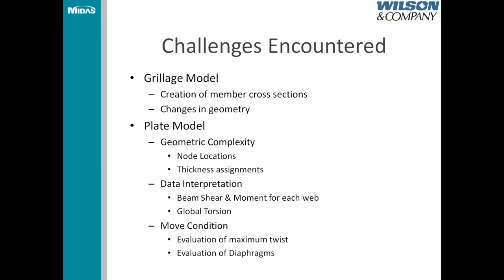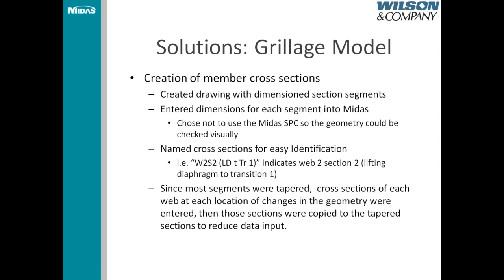Some of the challenges encountered: for the grillage model, the main challenge was the creation of member cross-sections and changes in geometry. For the plate model, there's obviously the geometric complexity — getting node locations and assigning thicknesses appropriately. Data interpretation required much more effort than with the grillage model; beam shear and moment for each web were not direct outputs. Global torsion similarly required extra work. And for the move condition, determining how to evaluate the maximum twist and its effect on the bridge and diaphragms was a challenge.